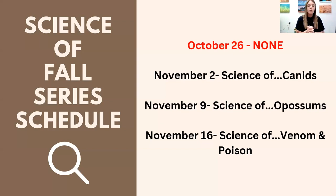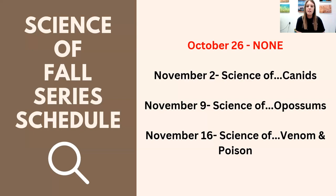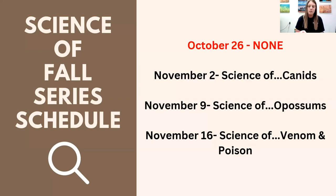Next week we do not have a Science of — we have a really big event, so we decided to forego it. But we will continue the week after. November 2nd we'll be talking about canids — like a dog, wolf, coyote, or fox, all the dog-like animals. Then November 9th will be opossums, and we'll finish the series on November 16th, right before Thanksgiving, talking about venom and poison.